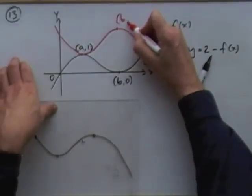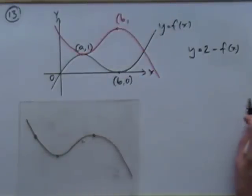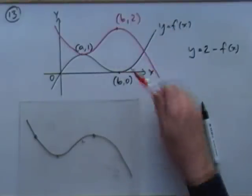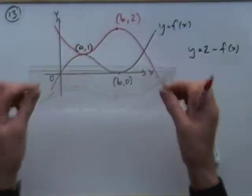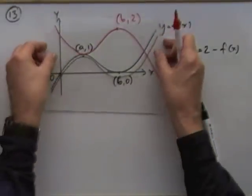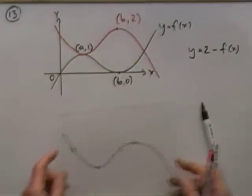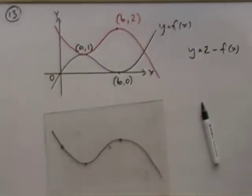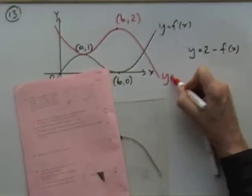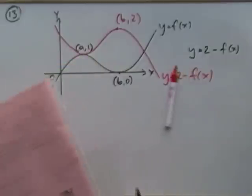The new turning points: b would be along still, but up at 2, because the whole thing was turned upside down and then shifted up. They just ask for the positions of the turning points. So to summarise: sketch the graph of y equals 2 minus f of x.